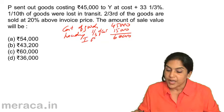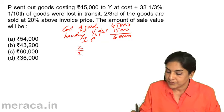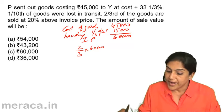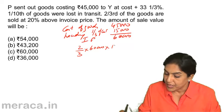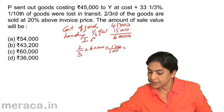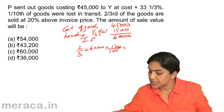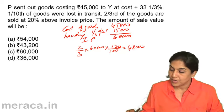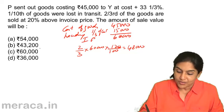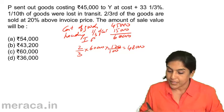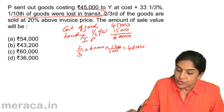Two-thirds of the goods are sold at 20% above invoice price. Two-thirds of 60,000 is sold at 20% above invoice price, so × 120/100. Two-thirds of 60,000 is 40,000 × 120% = 48,000. But 48,000 is not one of the options, and we don't have an option saying 'none of the above.' What could have gone wrong? We ignored that one-tenth of the goods were lost in transit.